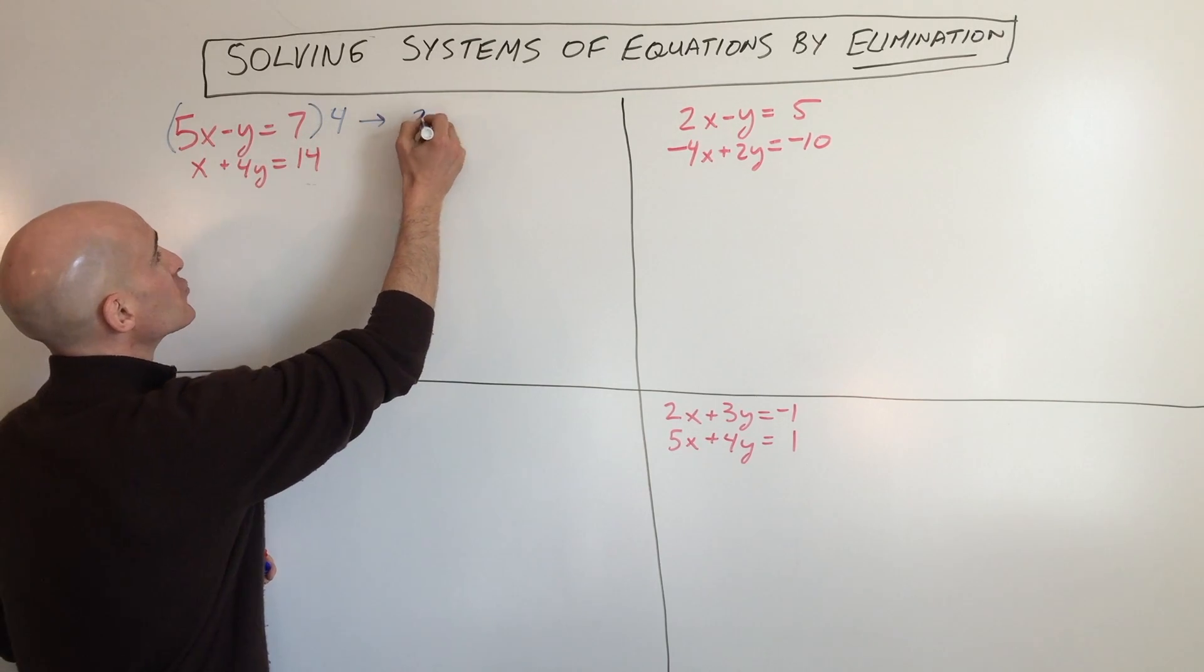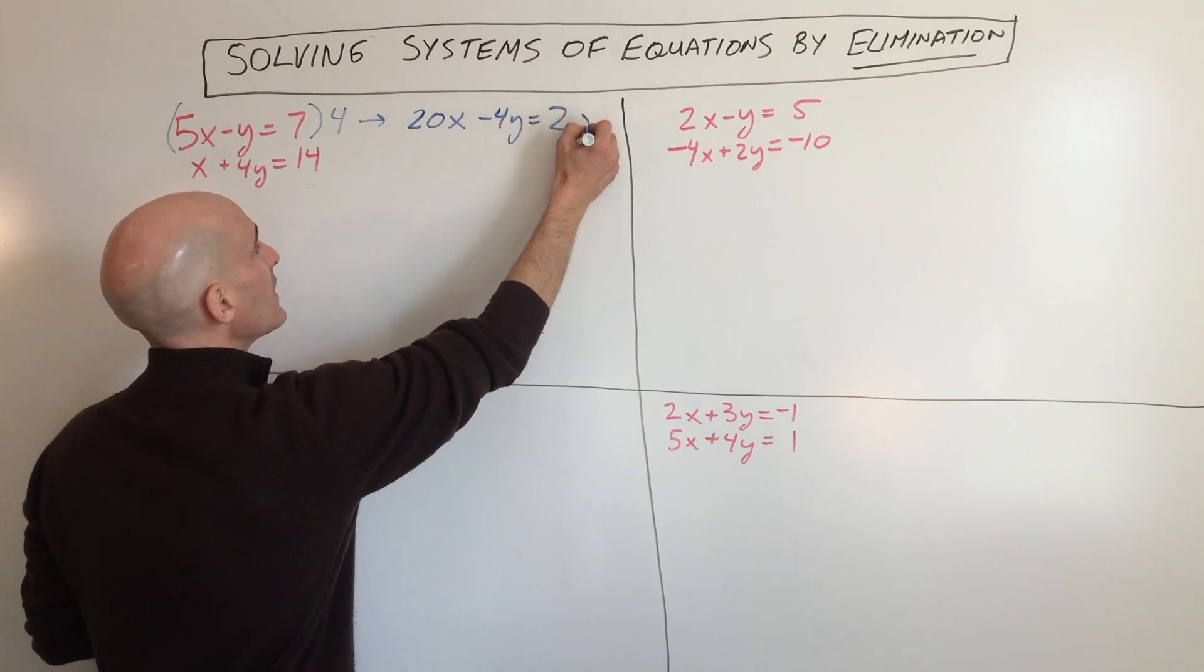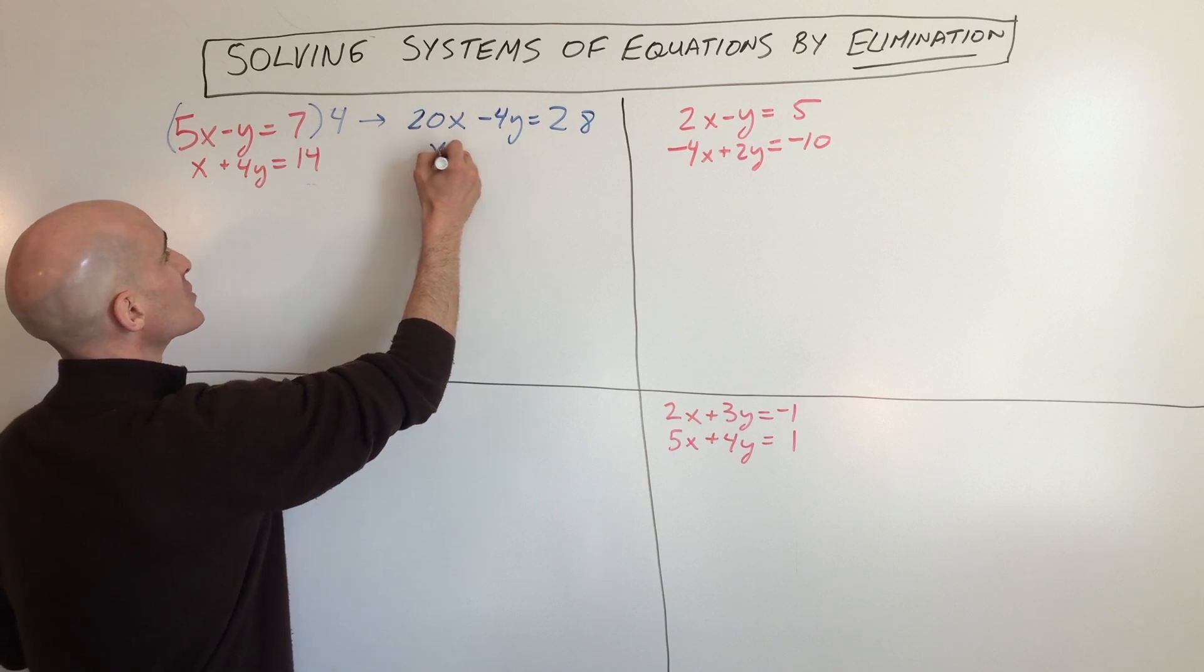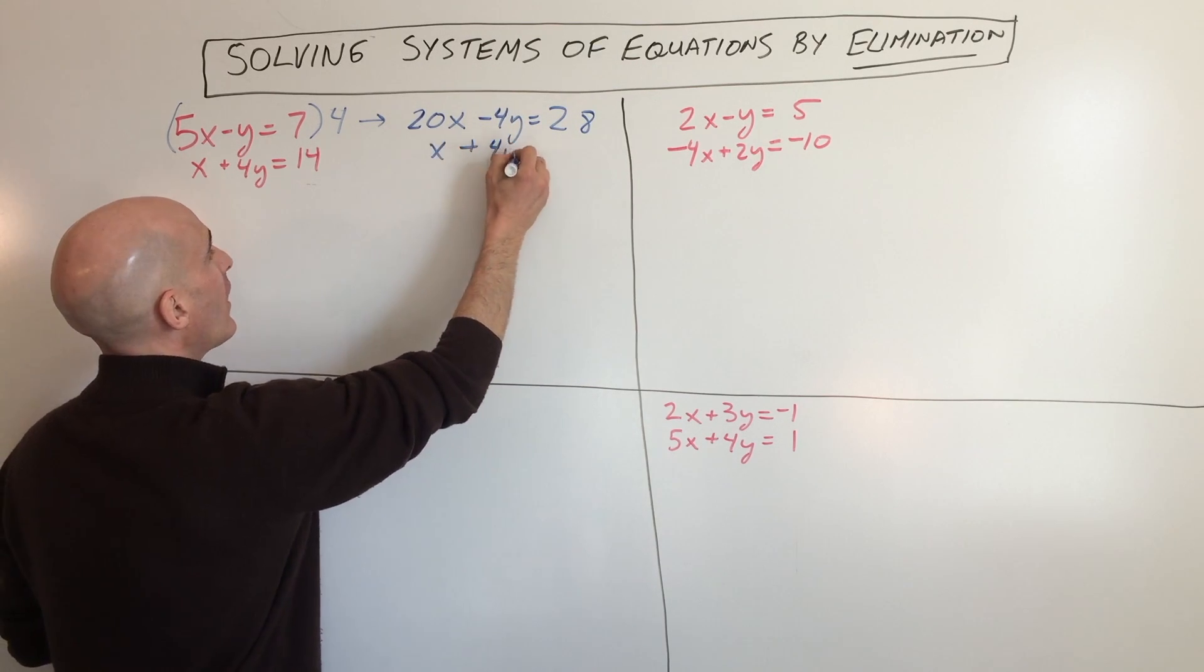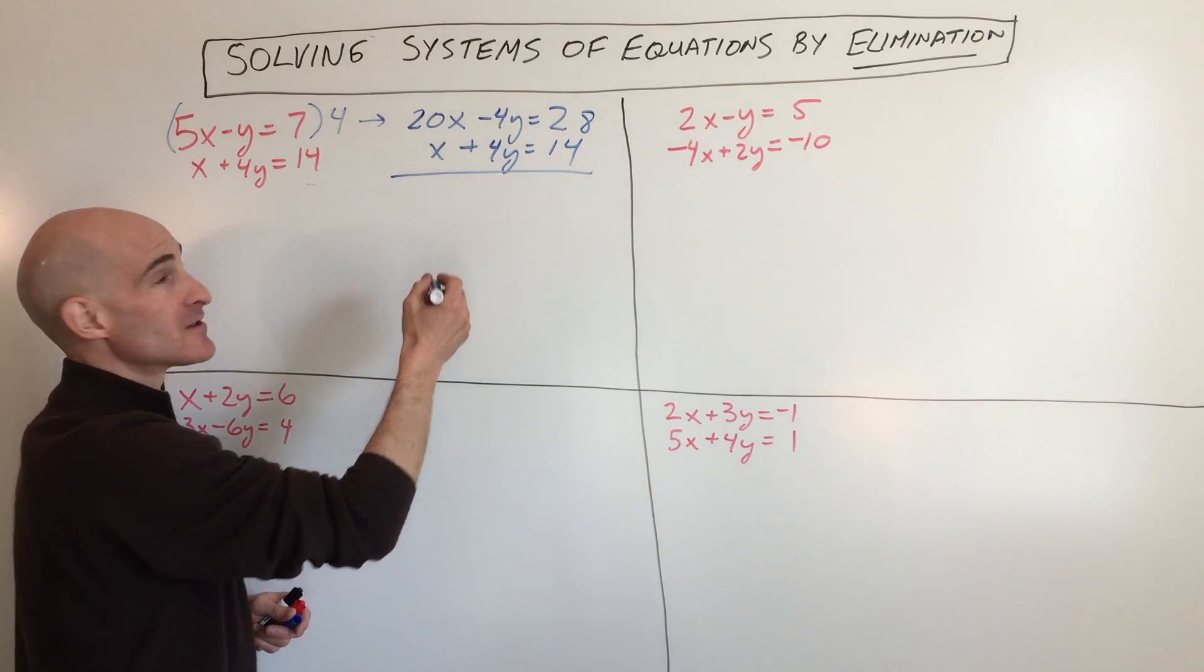So that gives you 20x minus 4y equals 28. And then this equation we're just going to bring over, x plus 4y equals 14. If we add them together, you can see the y's are canceling.